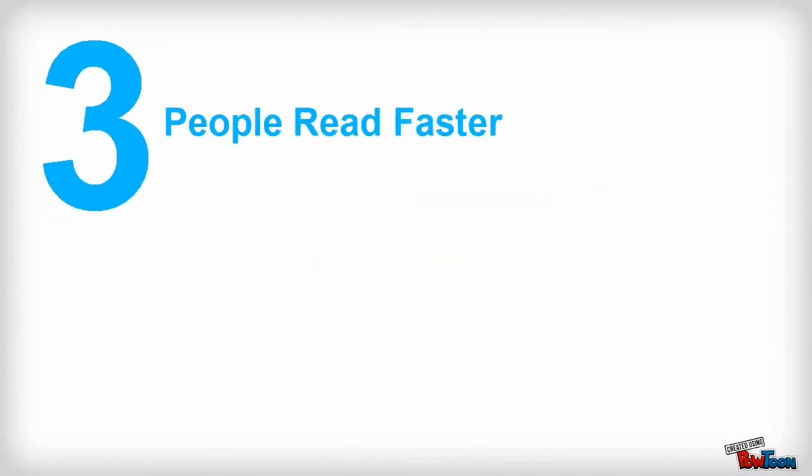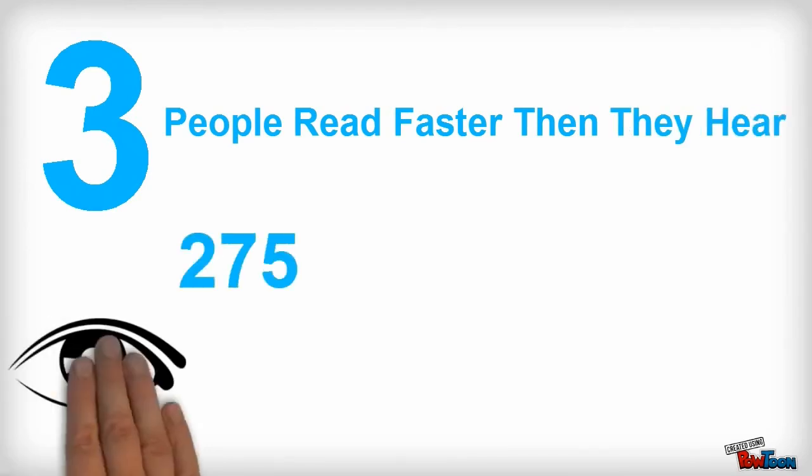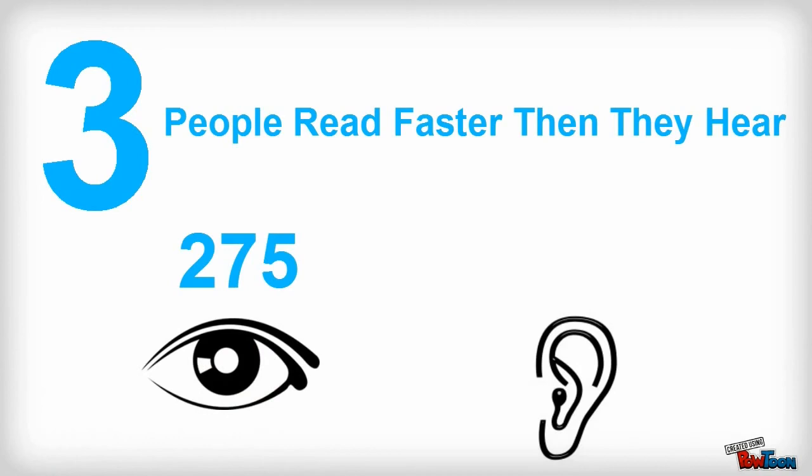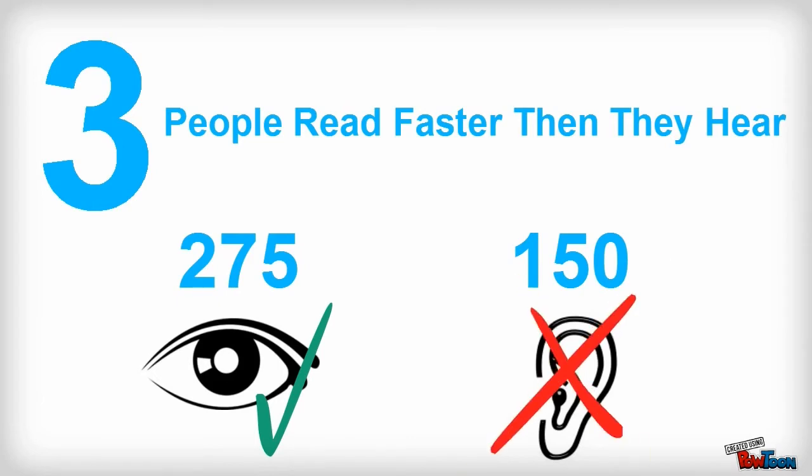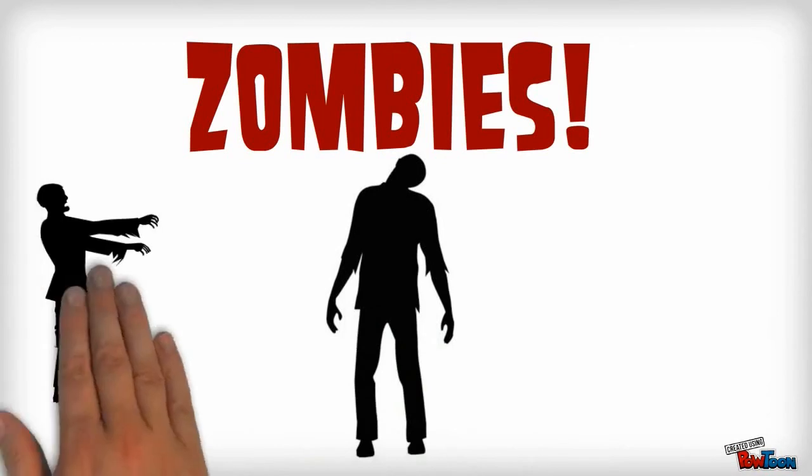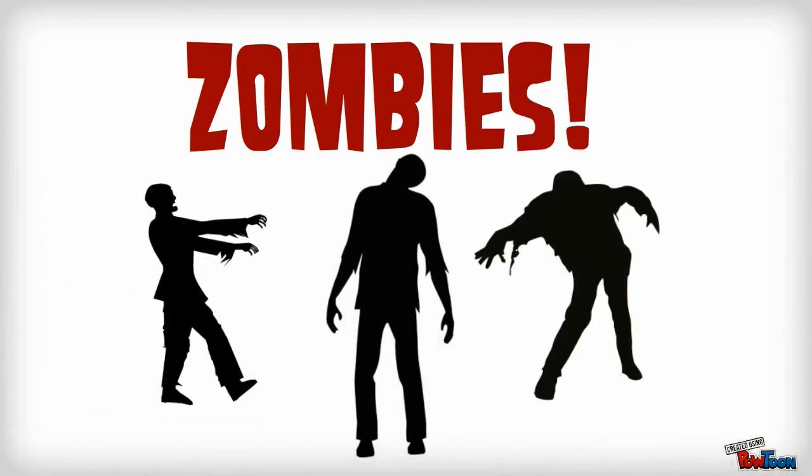Problem number three, people read faster than they hear. People can read about 275 words a minute versus being able to hear only 150 words a minute. This means people will read your bullet points before you can say them, and then they'll stop listening. Want to turn your audience into a bunch of zombies? Use bullet points.